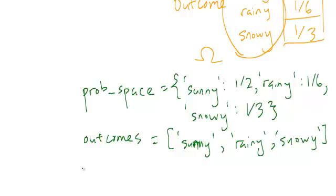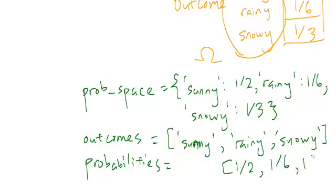and then the probabilities. So usually when we list out the probabilities, we have one half, one sixth, one third...